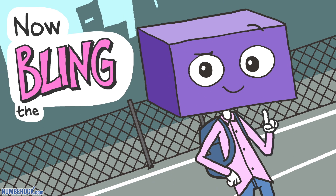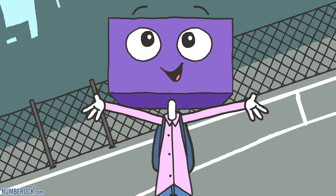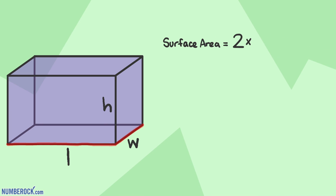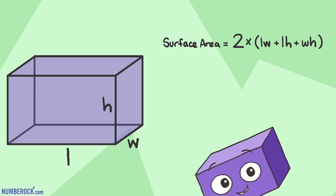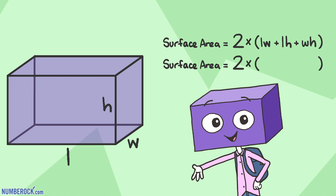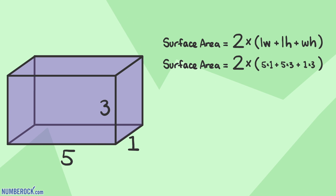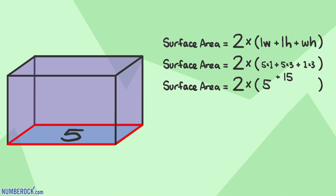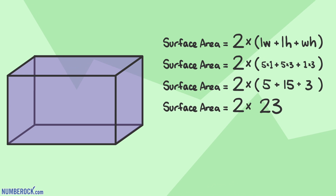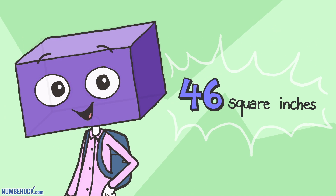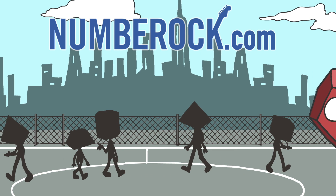Now Bling the prism, with the sparkle in his eyes, said my faces are diverse, but give it a try. Two times (LW + LH + WH) — solve it and find the surface area with ease. In inches, my length is 5, width is 1, and height is 3. Length times width is 5, length times height is 15, width times height is 3. Adding them gives 23, times 2 equals 46 square inches — the surface area of me.